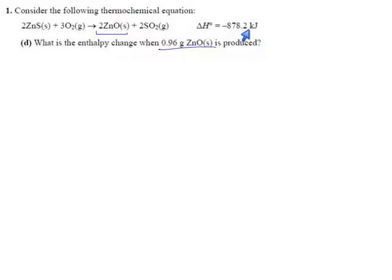Now it's 878.2 kilojoules per two moles of zinc oxide, so the number is not going to change. It's still going to be a delta H of minus 439.1 kilojoules, it's just going to be per mole of zinc oxide instead of zinc sulfide.